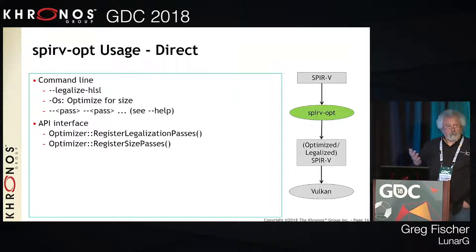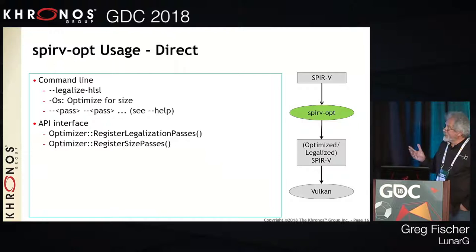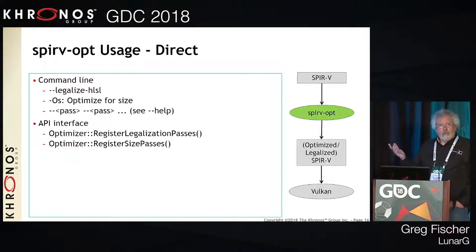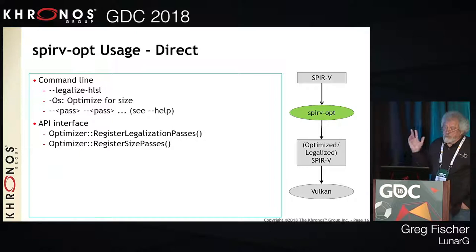SPIR-V Opt can be called directly on a SPIR-V file. There is a command line option just for legalization of HLSL and those operations, and also an option to optimize for size. We also have the ability to call individual passes and specify the order — you can call them in any order you wish, and those are all documented.